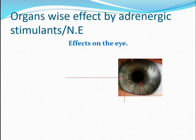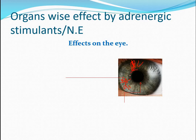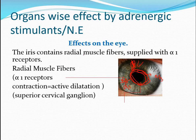In the human eye, this is the iris. It has radial muscle fibers and these radial muscle fibers have alpha-1 receptors. There are also circular muscle fibers, and these circular muscle fibers are supplied with M3 receptors. They are supplied by the third cranial motor nerve.